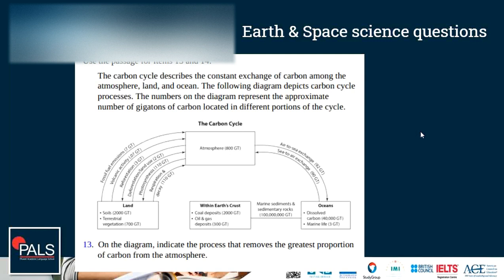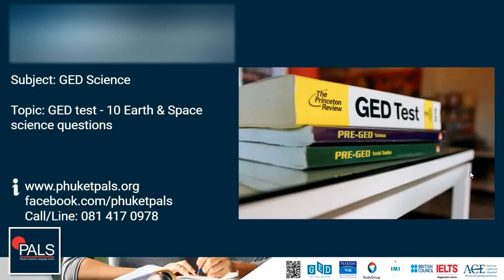Question 10: Using the diagram, indicate the process that removes the greatest proportion of carbon from the atmosphere. We look for arrows going away from the atmosphere. Three options: reforestation at 3 gigatons, photosynthesis at 110 gigatons, and air-to-sea exchange at 92 gigatons. The greatest is photosynthesis. So we place an X on photosynthesis. That's it — 10 questions on Earth and Space Science.